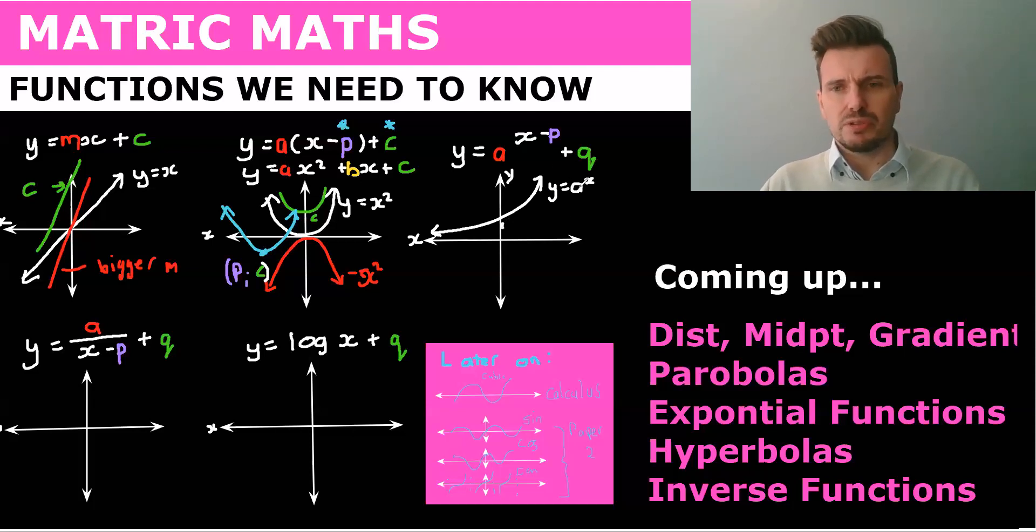So anything to the power of zero is one. So we know our intercept is always one. Now what does q do? q will shift it up. So like c, so everything in green you can see is an upward shift. And this is no exception. So this would be y equals a to the x plus q where this point here was q.